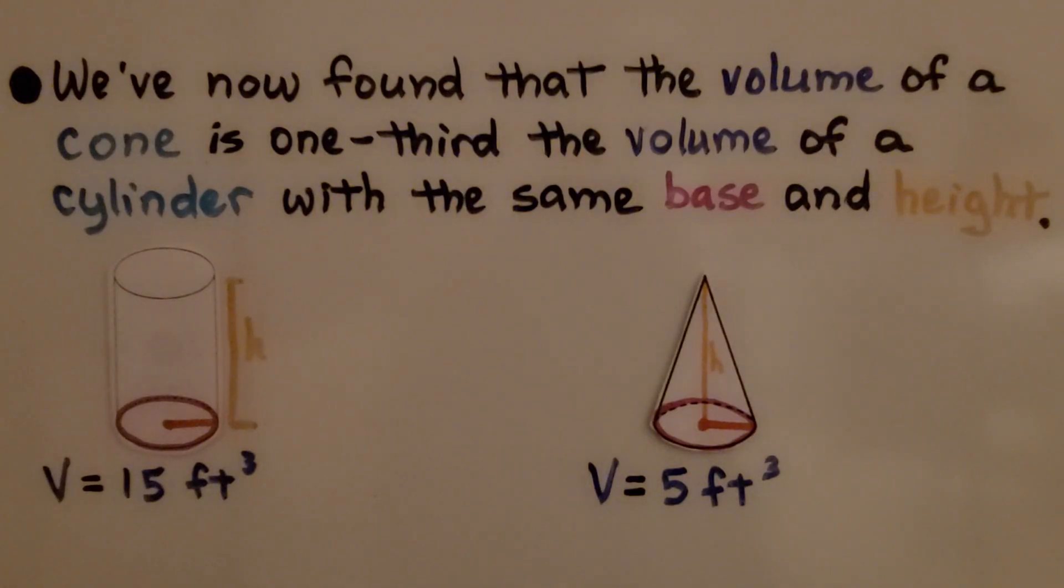We have now found that the volume of a cone is one-third the volume of a cylinder with the same base and height. We did that in the previous video, 13.2a, with our rice experiment. If the volume of this cylinder is 15 feet cubed and they have the same height and base area, then the volume of this cone is 5 feet cubed.